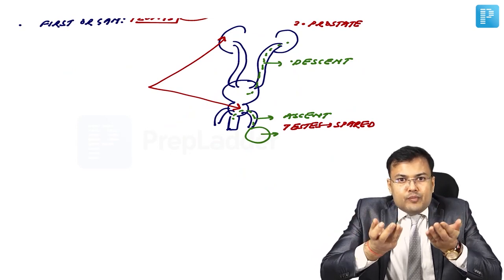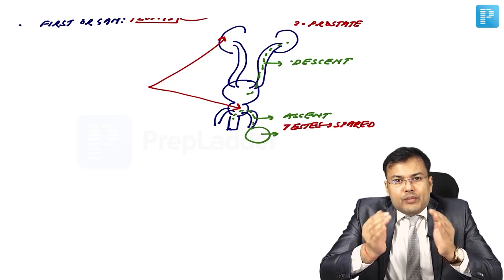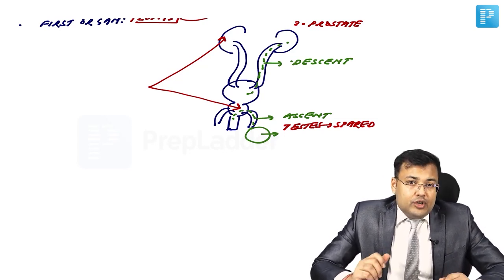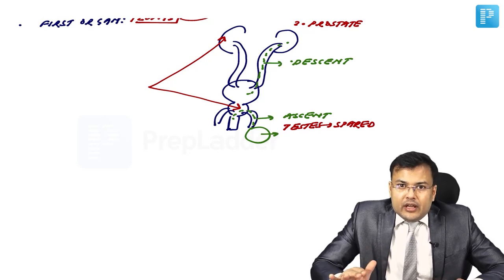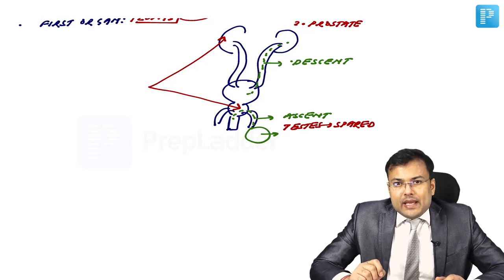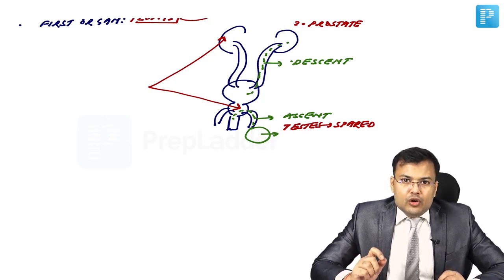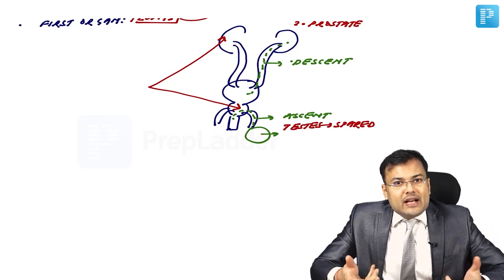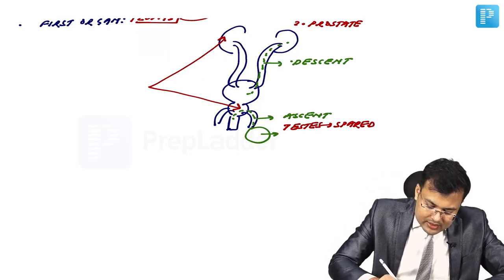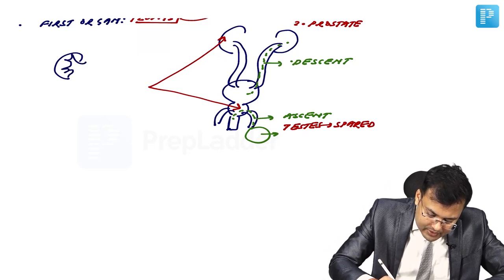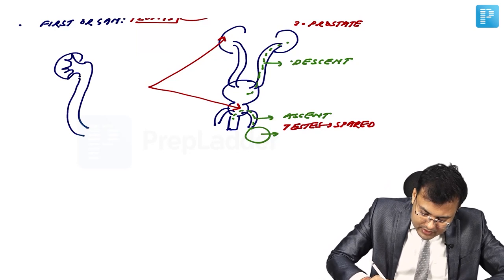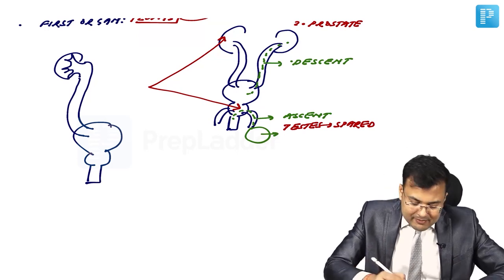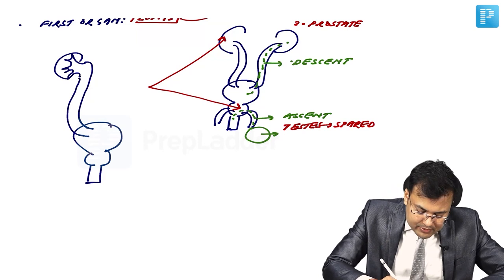After hematogenous spread, bacteria are lodged in the periglomerular capillaries — around the glomeruli. In most people with good immunity, the infection is either cleared or remains dormant. When immunity is compromised, there is activation of the bacteria.